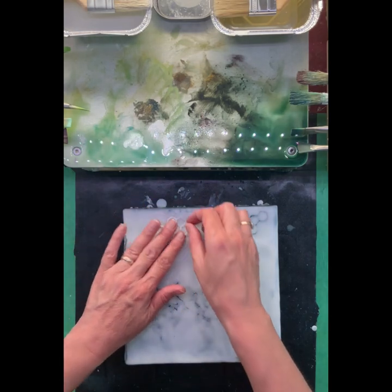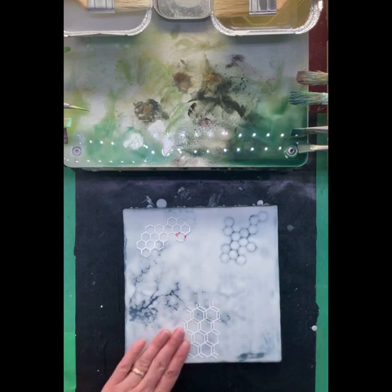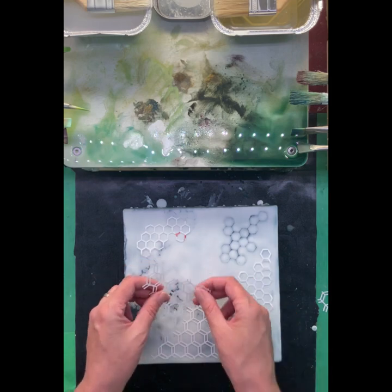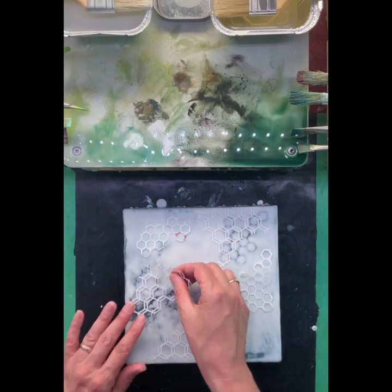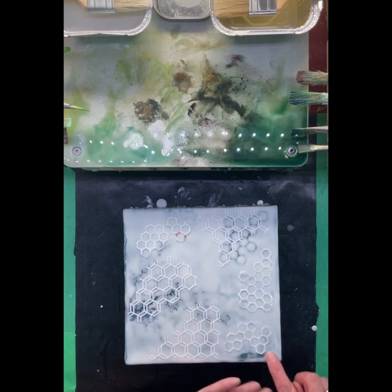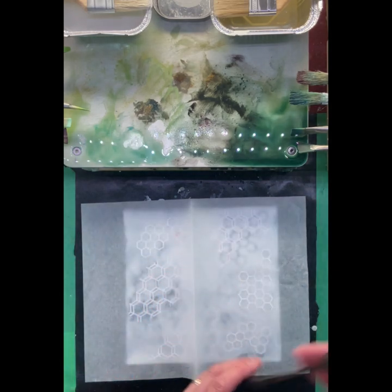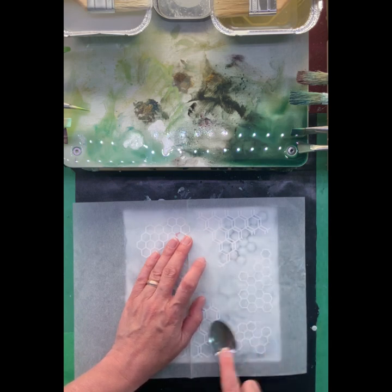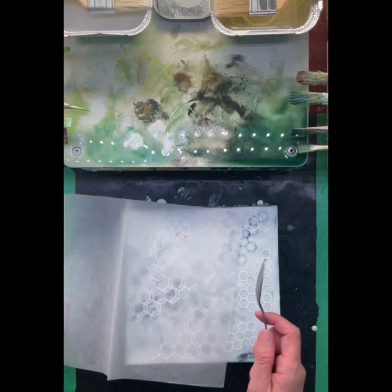I'm just going to push it down with my fingers. So my wax is just warm, but I'm going to burnish these down with a spoon, and this is just some tracing paper. I'm just going to give it a light burnish to make sure it's stuck down onto the wax, so I can get a nice crisp stencil.